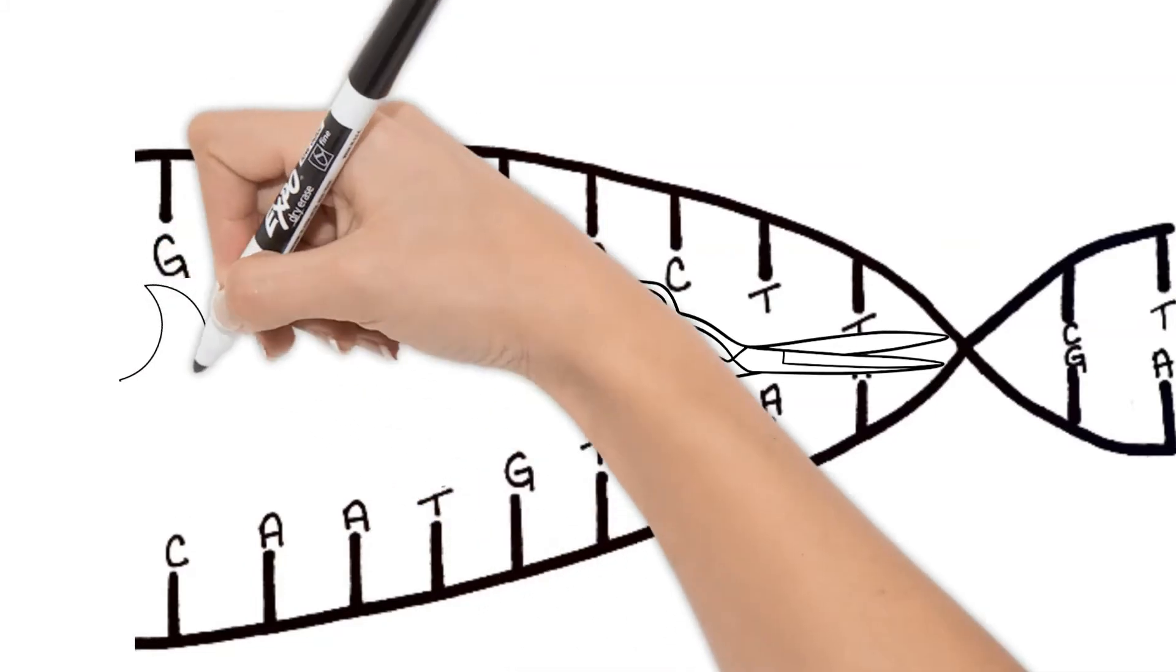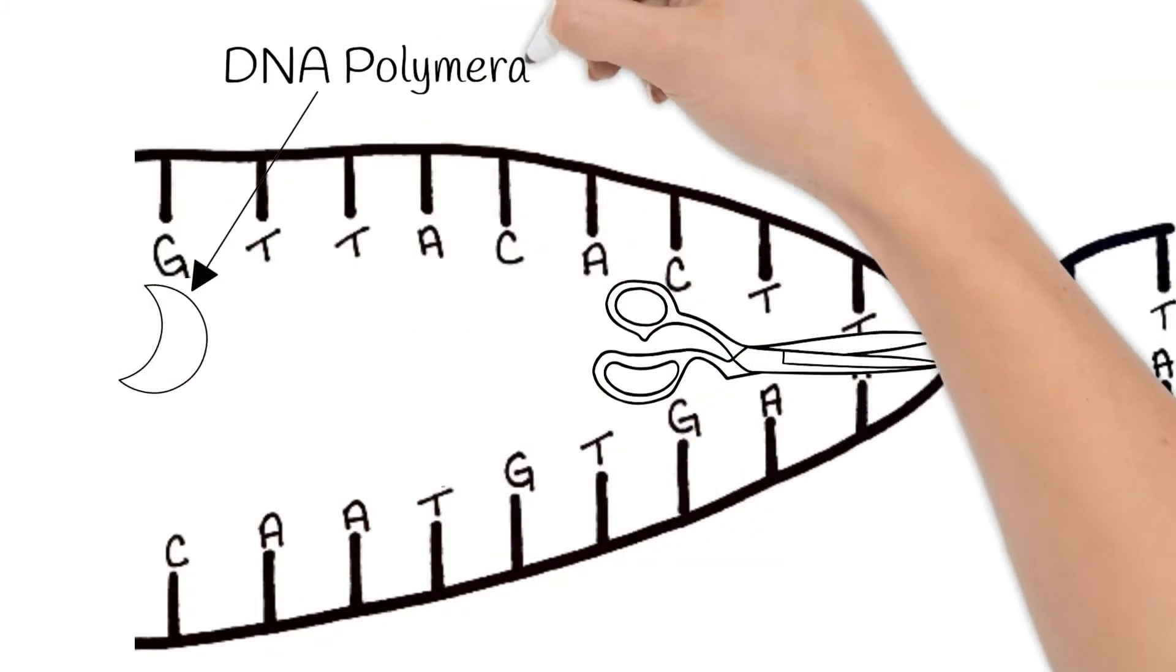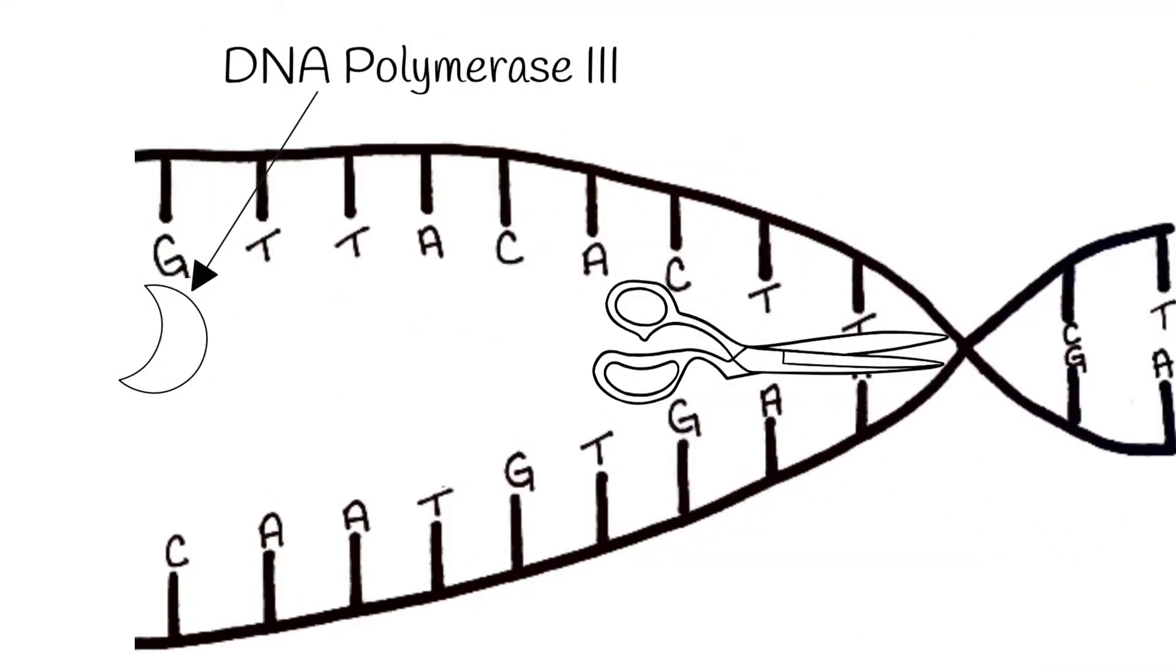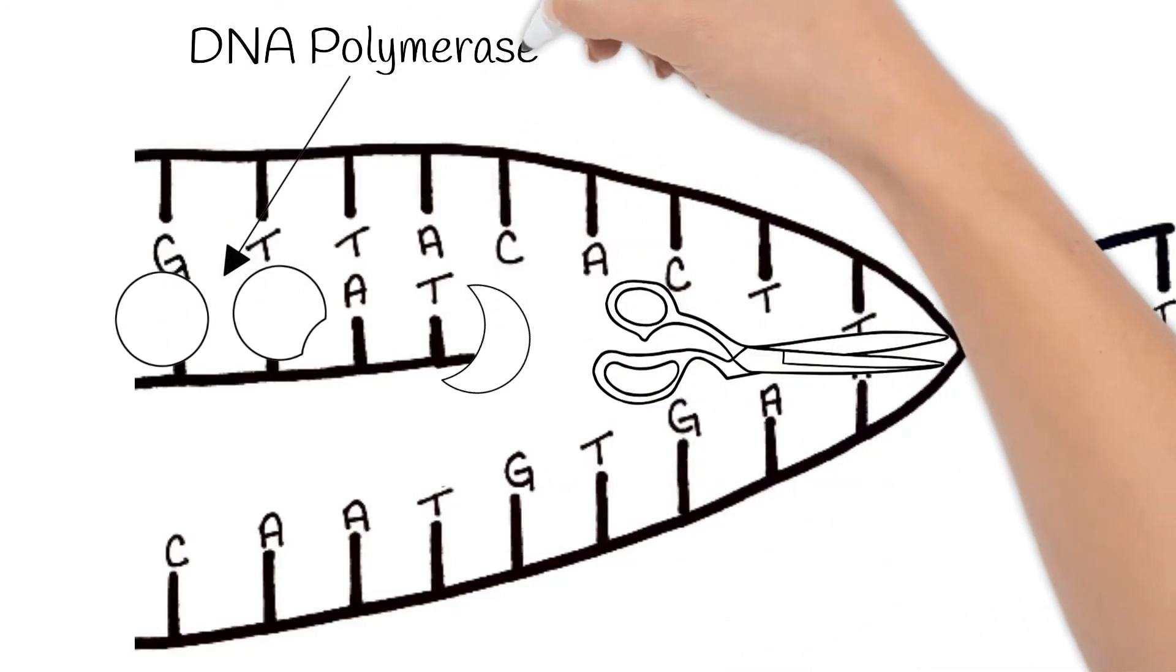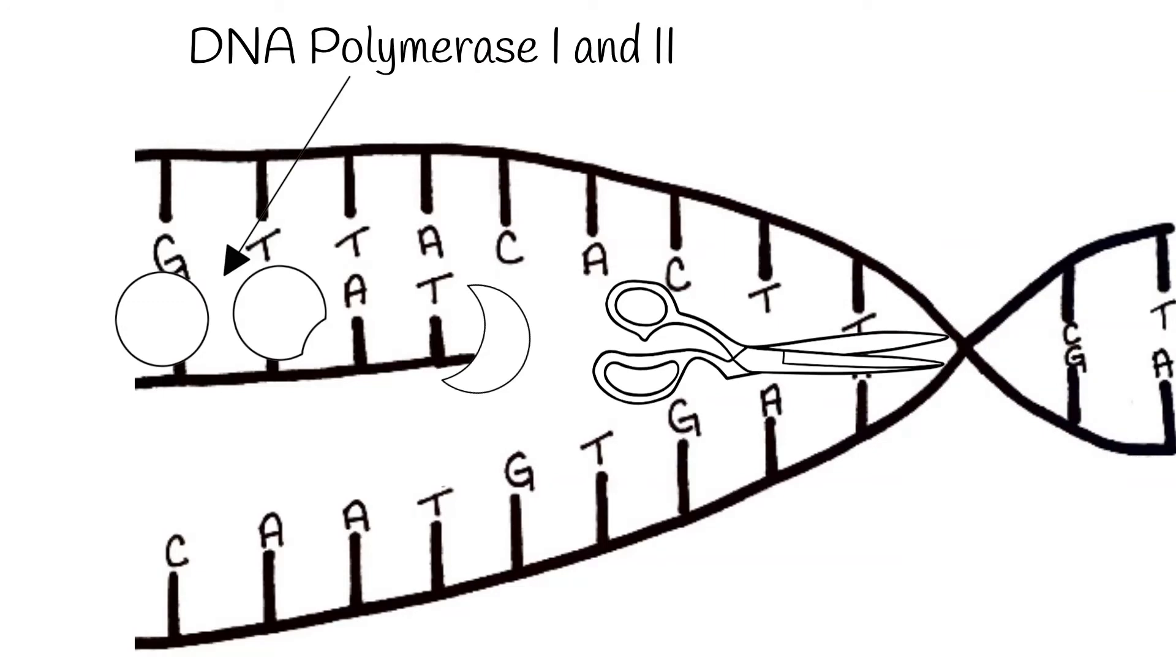Another enzyme, DNA polymerase 3, builds new strands of DNA. It uses the current DNA as a template and adds the complementary nucleotide, creating a new strand. Polymerase 1 and 2 proofread the DNA to make sure there are no mistakes.